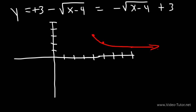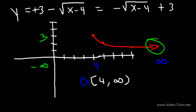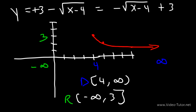That's the shape of the graph. The domain is [4, ∞), since 4 is the lowest x value and it's included. For the range, the highest y value is 3 and the lowest is negative infinity — as the graph travels right it slowly decreases forever. So the range is (−∞, 3], including 3.